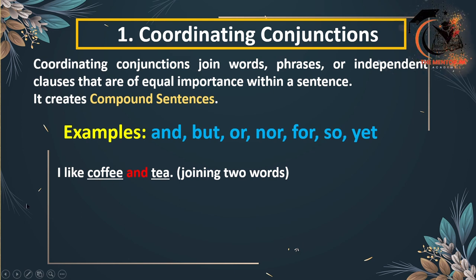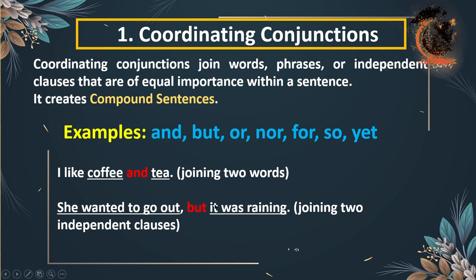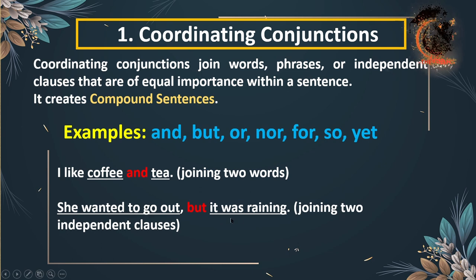In the next sentence: 'She wanted to go out, but it was raining.' Here, 'but' is a coordinating conjunction and it combines two different clauses.